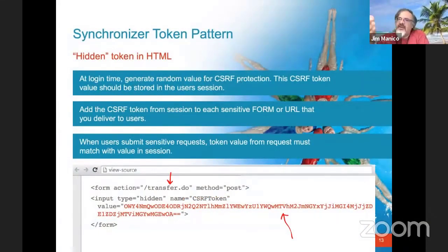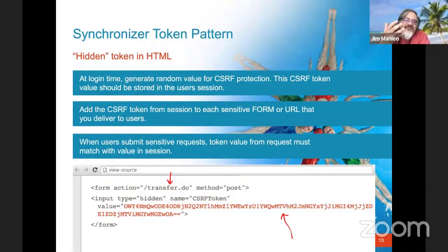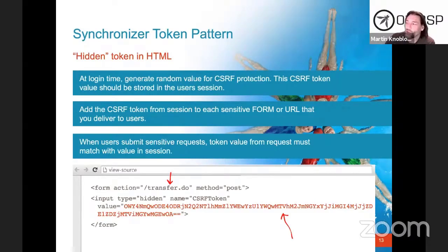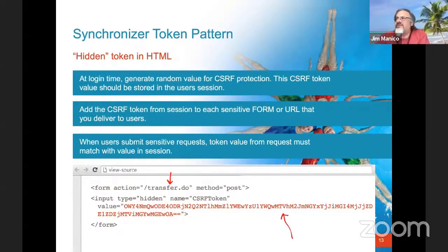Next question: can CSRF attacks be automatically tested with DAST tools like IBM AppScan, WebInspect, etc.? I don't agree that you need manual testing. Testing for CSRF is trivial — you make a sensitive transaction request, record it, log out, log back in, and replay the transaction. If it works, you've got CSRF. DAST technologies do a good job with this, especially with controlled authentication. You log in, submit a transaction, record it, log out, log back in, resubmit the transaction. If it works, you've got CSRF. Tools like Burp do this. Automation is critical in the DevOps era.